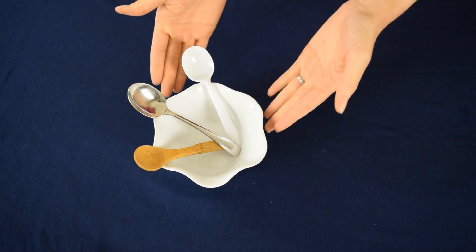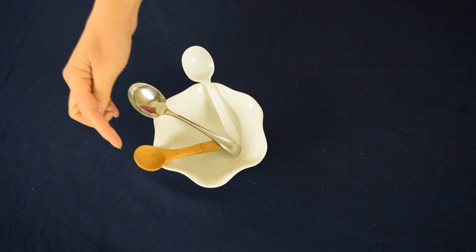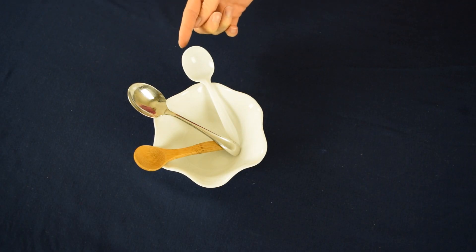To begin, you're going to take a small glass bowl, and inside you're going to place three spoons. One spoon that's made of wood, one spoon made of metal, and one spoon made of plastic.